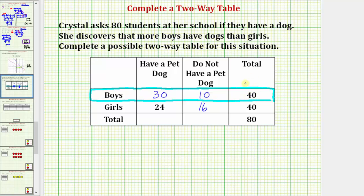Now to complete the table we just need to find the totals at the bottom, where this total would be the number of boys and girls that have a dog, and this total would be the number of boys and girls that do not have a dog. Well, 30 plus 24 is equal to 54, and 10 plus 16 is equal to 26. Notice how this works out perfectly because 54 plus 26 does equal the total students surveyed, which is 80.